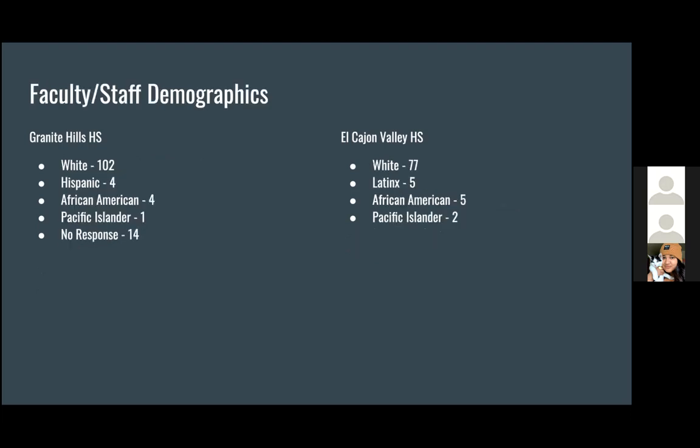Looking at the faculty and staff demographics between the two schools, the biggest population at both high schools is white, with Hispanic being the second largest, African American being about the same, Pacific Islander similar, and then there are 14 people at Granite Hills High School who prefer not to disclose their ethnicity.